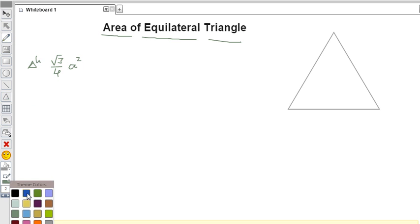I am taking an equilateral triangle where all three sides are equal. This triangle is ABC, and the length of each side is a. So this side is a, as well as this is also a.